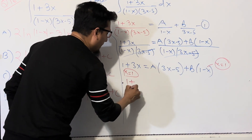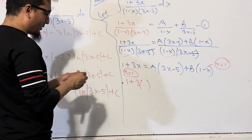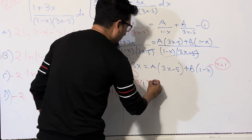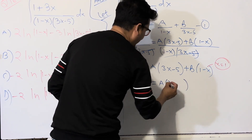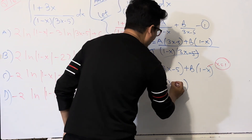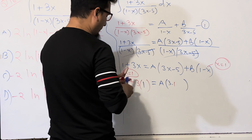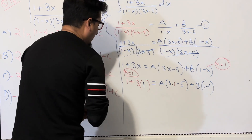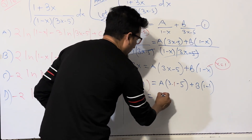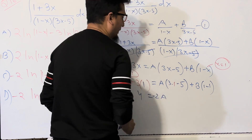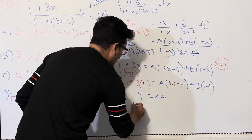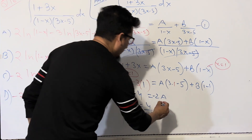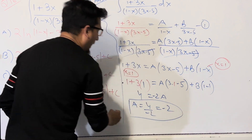Substituting x = 1: left side gives 1 + 3(1) = 4. Right side: A(3(1) - 5) + B(1 - 1) = A(3 - 5) + 0 = -2A. So 4 = -2A, which gives A = -2. Now I know A = -2.